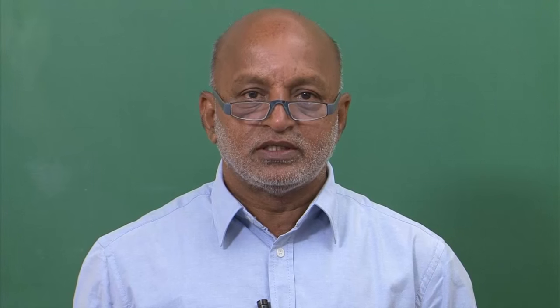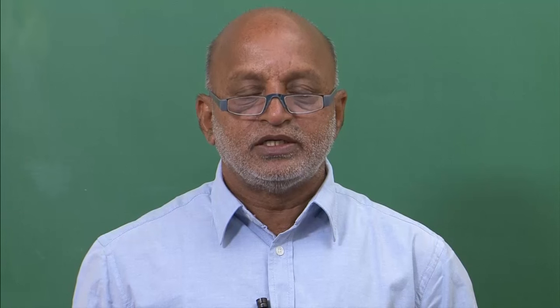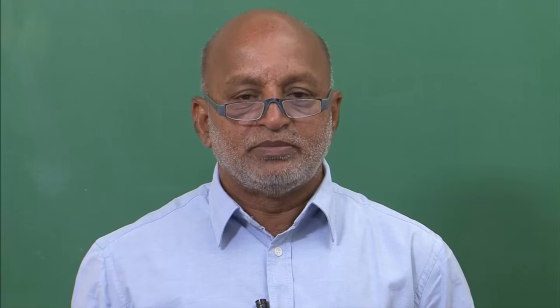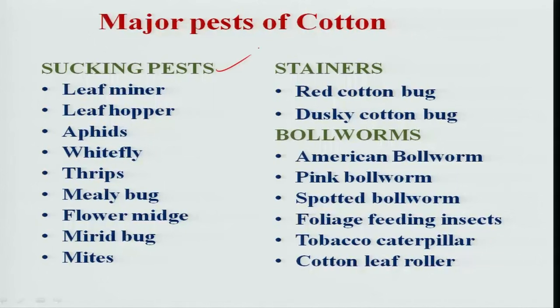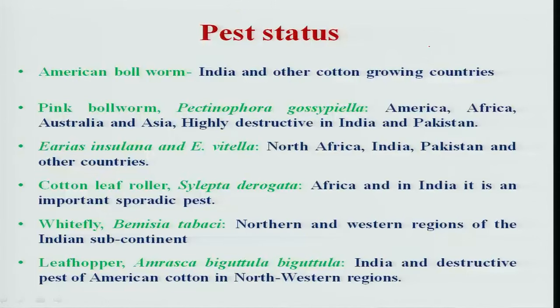Today in India, the majority of the area is under BT cotton, which manages lepidopteran pests. At the same time, sucking pests cause much damage. The major pests include sucking pests and bollworms, which cause much damage in non-BT cotton, and stainers like red cotton bug and dusky cotton bug, which are late-occurring pests causing damage during later stages.